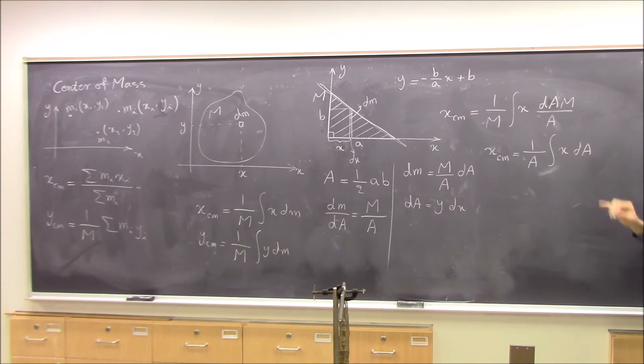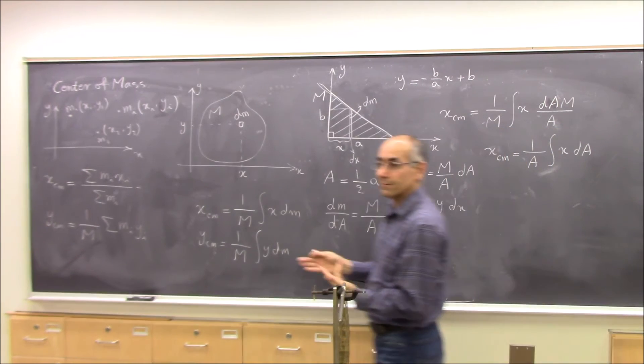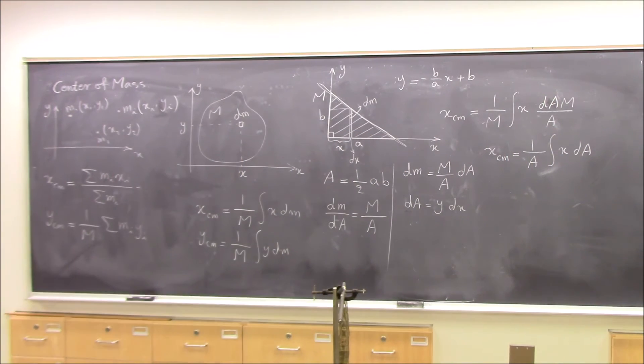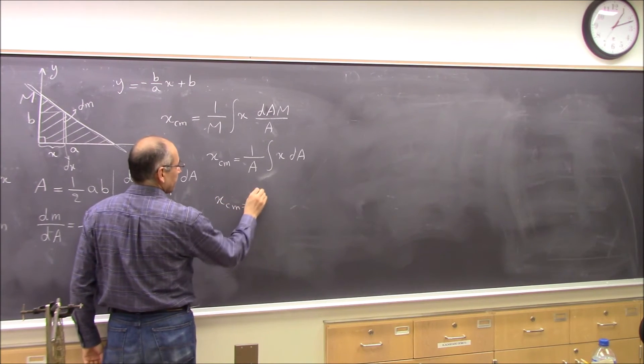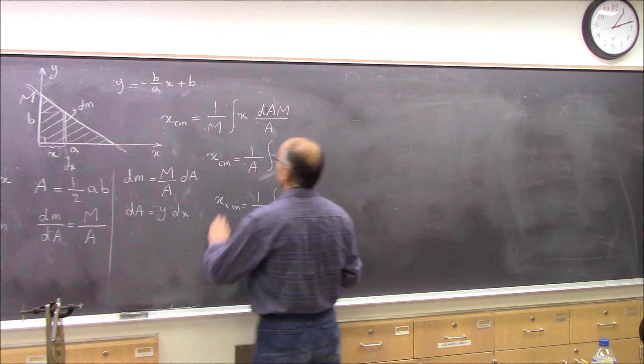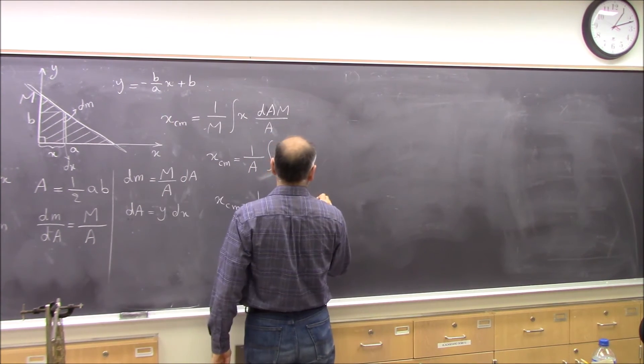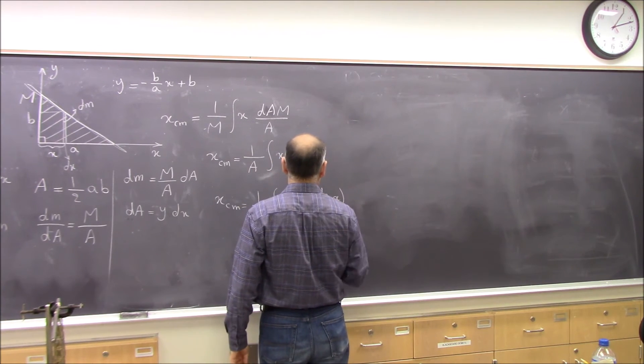So when something is like a plate, everywhere is uniform mass density, you can just find the centroid. And that's why maybe in engineering they call it centroid. They don't call it center of mass, because it's the center of the object. So x of center of mass is equal to 1 over the area, integral of x times y, where y is b minus b over a times x, dx.